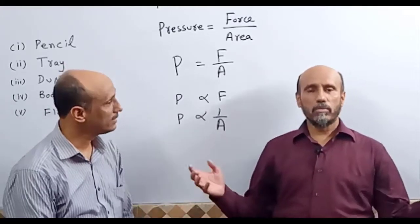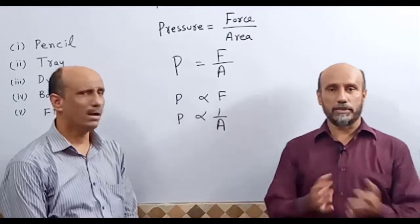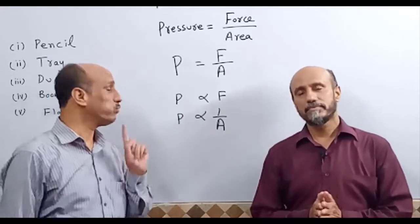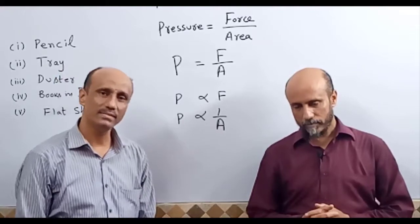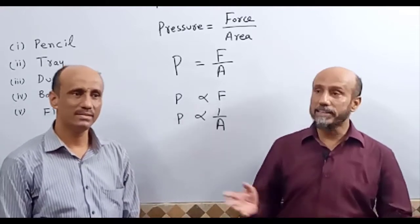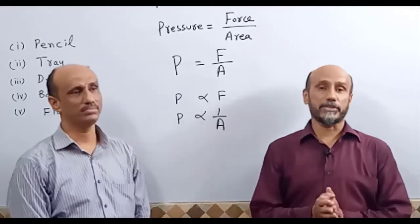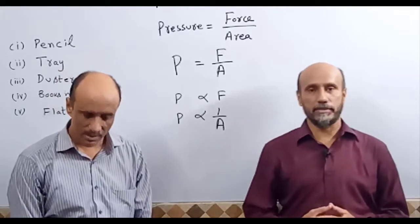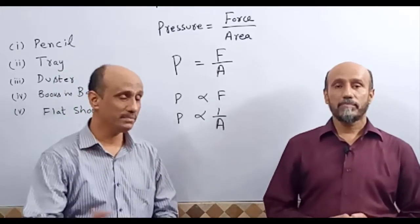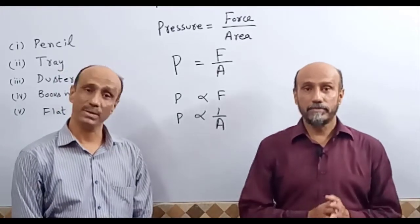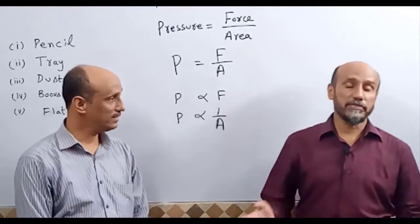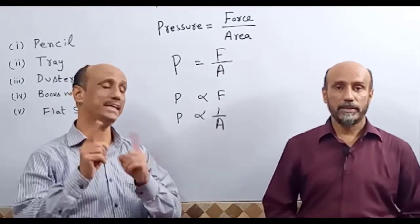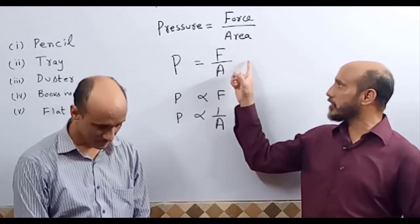So can you tell what is meant by pressure? Pressure is force acting per unit area — that is normally called pressure. What is the formula of pressure? P is equal to F over A. P stands for pressure, F stands for force, and A stands for area. So this is the formula of pressure: P equals F over A.